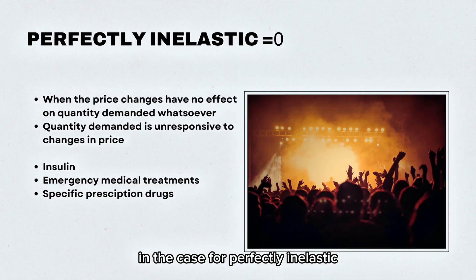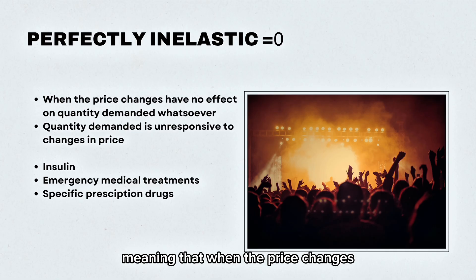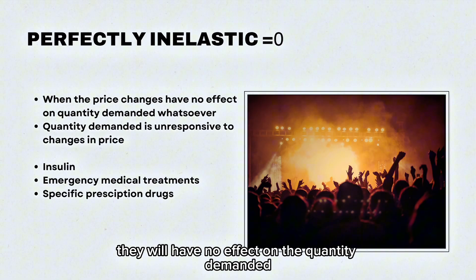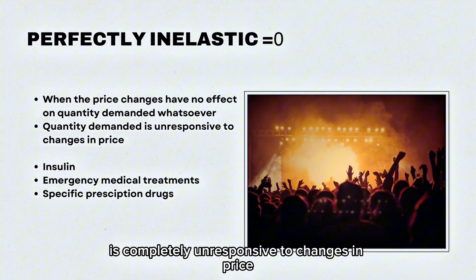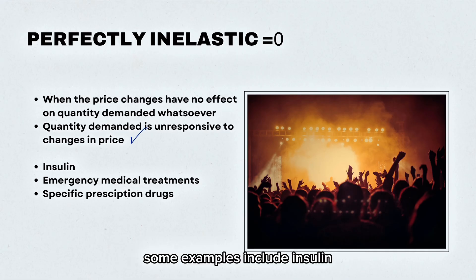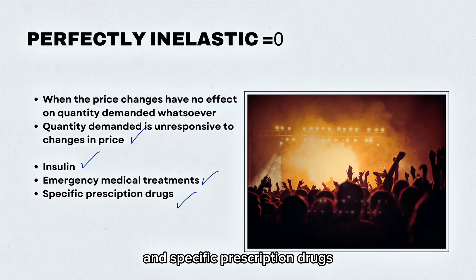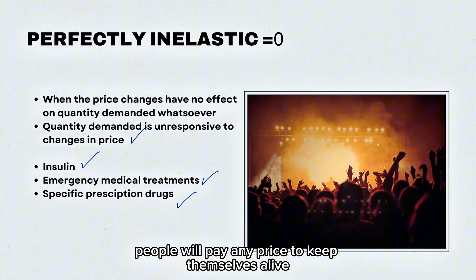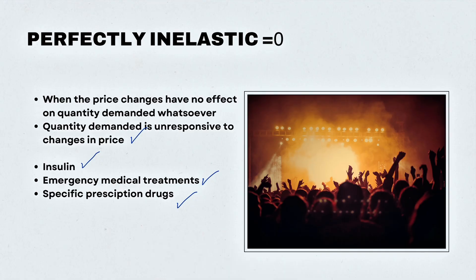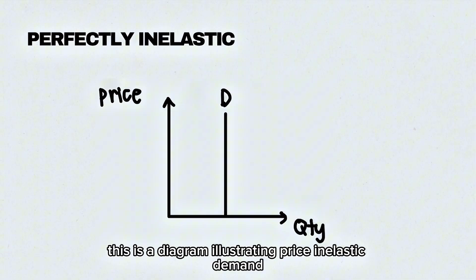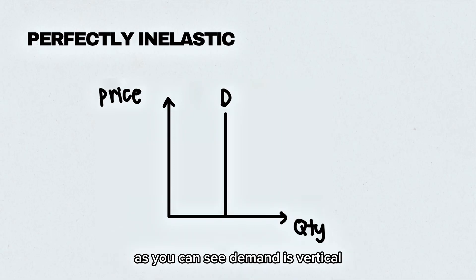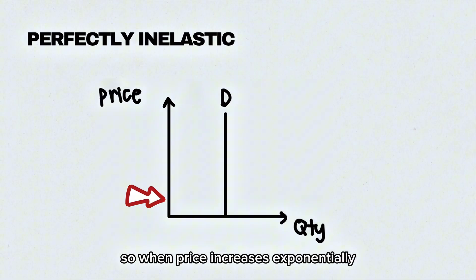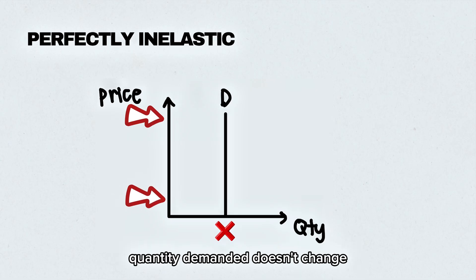In the case of perfectly inelastic, this is when PED equals 0, meaning that changes in price will have no effect on the quantity demanded. Quantity demanded is completely unresponsive to changes in price. Some examples include insulin, emergency medical treatments, and specific prescription drugs. In the case of insulin, as this is a life-saving drug, people will pay any price to keep themselves alive. The diagram illustrating perfectly inelastic demand shows a vertical demand curve, so when price increases exponentially, quantity demanded doesn't change.